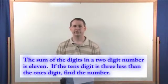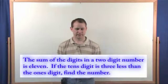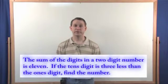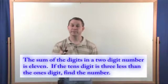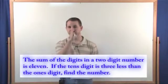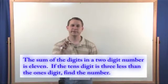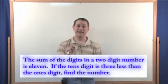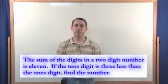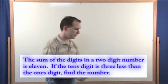So the first thing we have to do just like we have to do with any of these problems is we're going to understand what it's actually asking us. So we have a two digit number and we're going to be asked to find the number. So there's two digits, one, two. The sum of the digits in these numbers must be equal to eleven and if the tens digit is three less than the ones digit then we have to find the number. So let's do that.